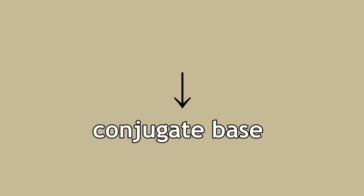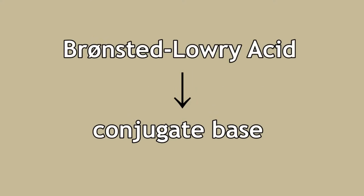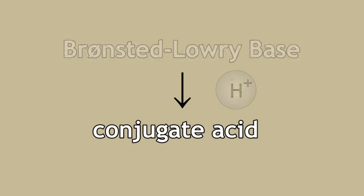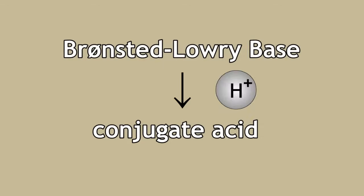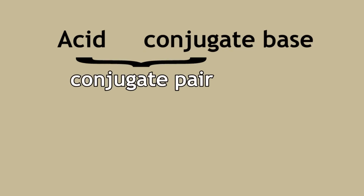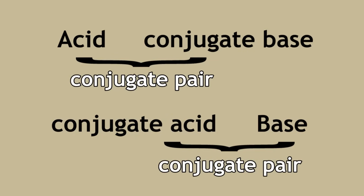In summary, a conjugate base is formed when a Bronsted-Lowry acid releases its proton, and a conjugate acid is formed when a Bronsted-Lowry base accepts a proton. A Bronsted-Lowry acid and its conjugate base is a conjugate pair, as is a Bronsted-Lowry base and its conjugate acid.